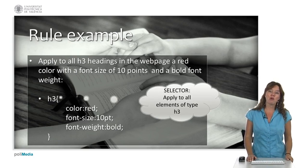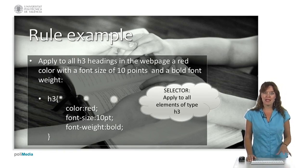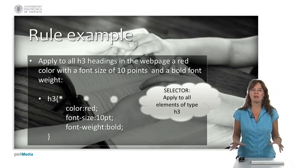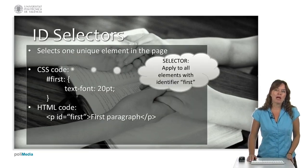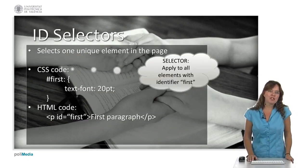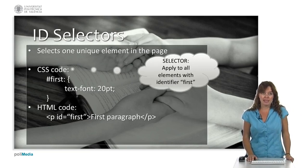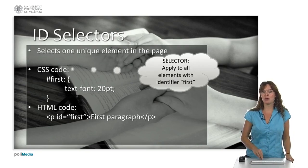The color will be red, the font size is 10, and the font weight is bold. This is a CSS selector that applies to all elements of type h3. We can also have other types of selectors — for example, based on IDs. Here we see an example: #first, with text font set to 20 points.